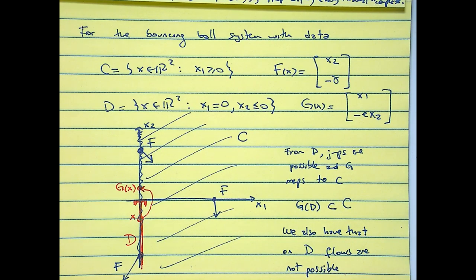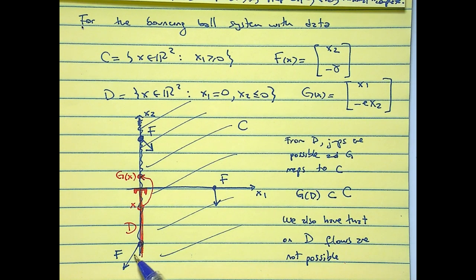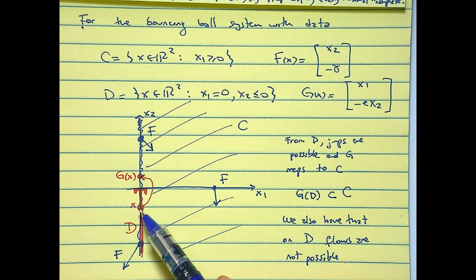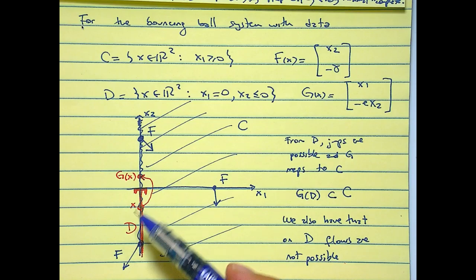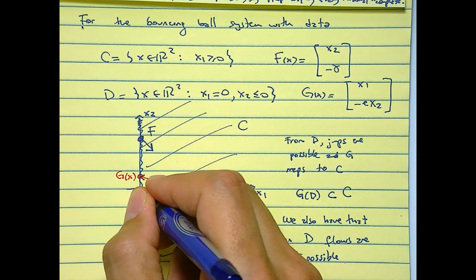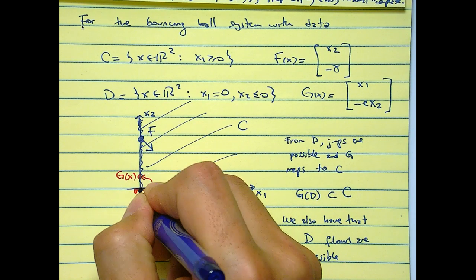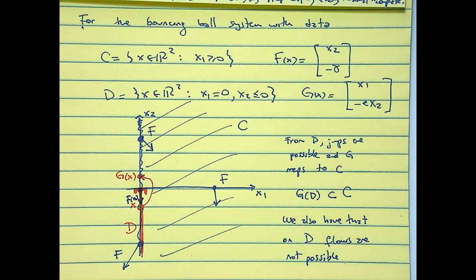And the flow when x2 is equal to zero points down, so this is my f. When you're here it will be x2 is negative so it's in that direction, so it points down like that. And every time that you jump from this point you get basically a new value that is having a smaller x2 component.